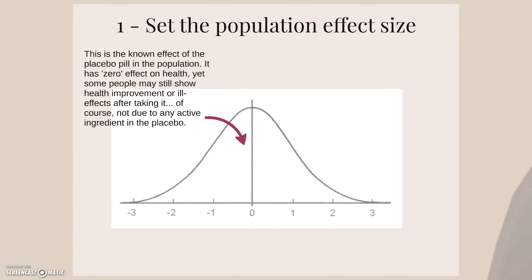So the first step in the procedure is to set the population effect size. This is the known effect of the placebo pill in the population. It had zero effect on health. Yet, some people may still show health improvement or ill effects after taking it, of course not due to any active ingredient in the placebo.